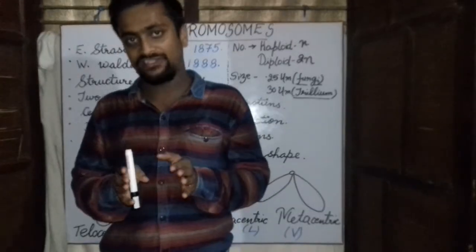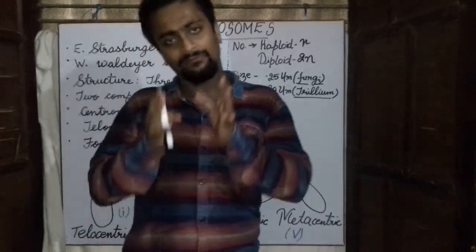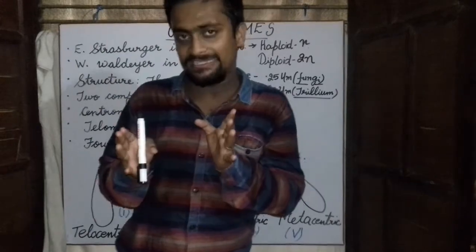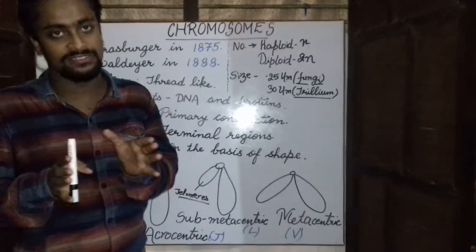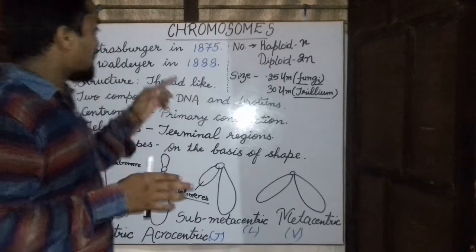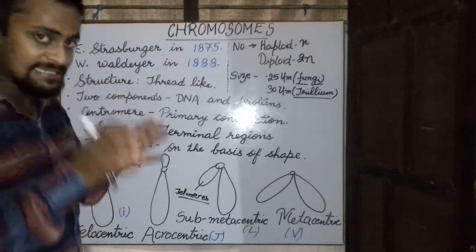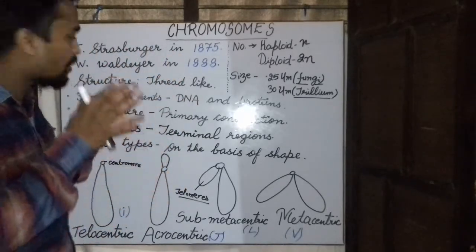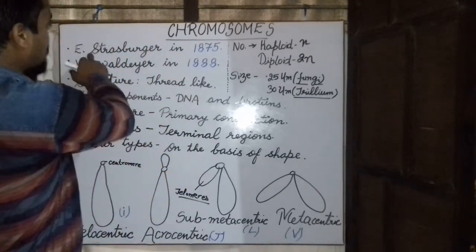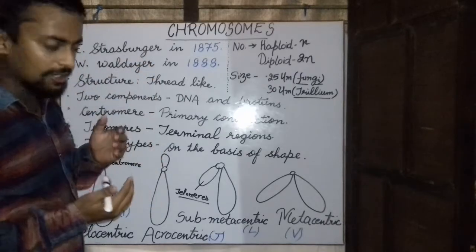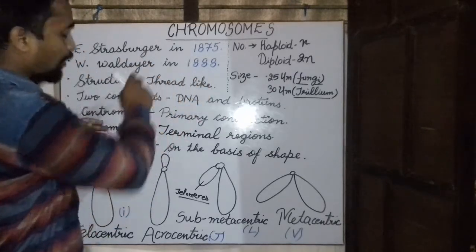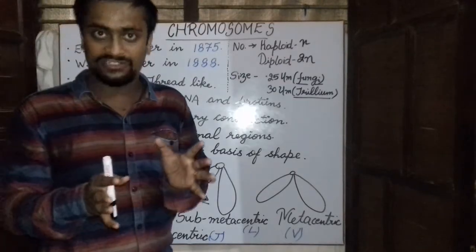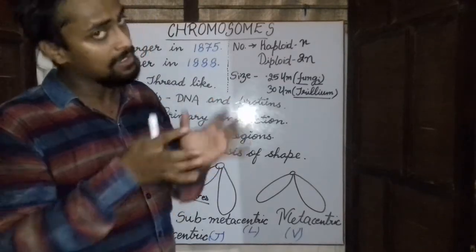Good afternoon students and welcome to today's lecture. Today we will be dealing with some thread-like structures called chromosomes which are present inside the nucleus. In 1875 these thread-like structures were first observed by E. Strasburger. Later on in 1888, W. Waldayer called these thread-like structures as the chromosomes.